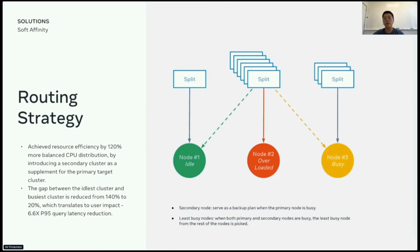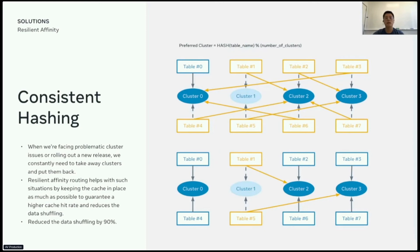The gap between the idlest cluster and the busiest cluster is reduced from 140% to 20%. And in terms of user impact, we observed six times p95 query improvement.